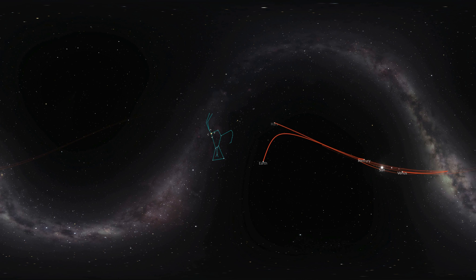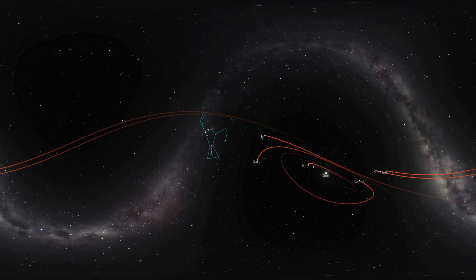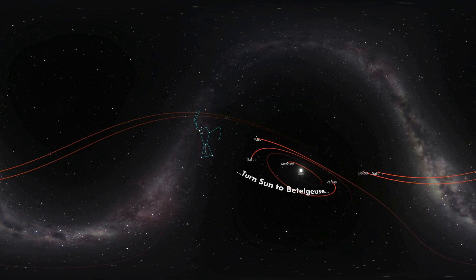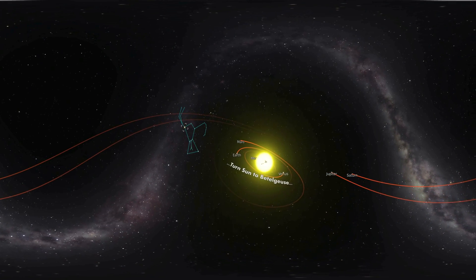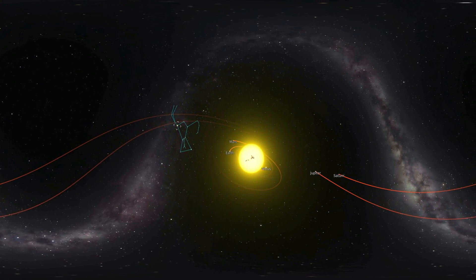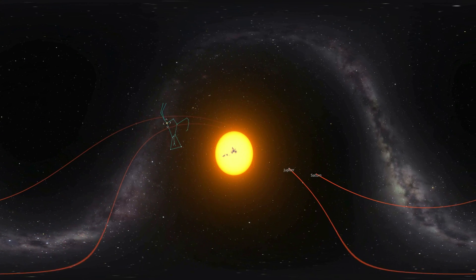Betelgeuse is so large that if we place it in our solar system where our sun is, its atmosphere would extend out to Jupiter's orbit. Let's do that here in our simulation, just give it some time to get as big as it is in real life. It is what we call a red supergiant, and as its name implies, it's enormous and really red.